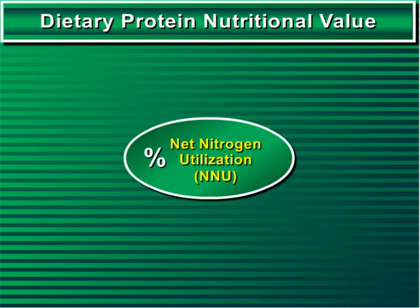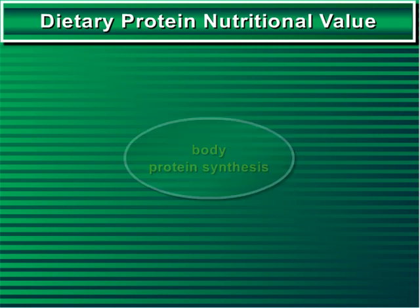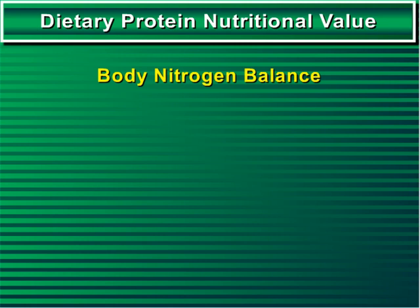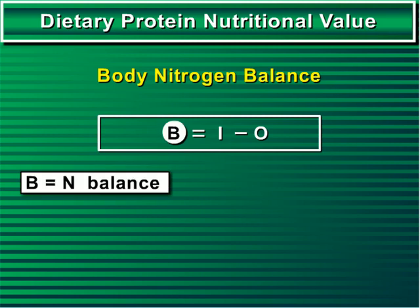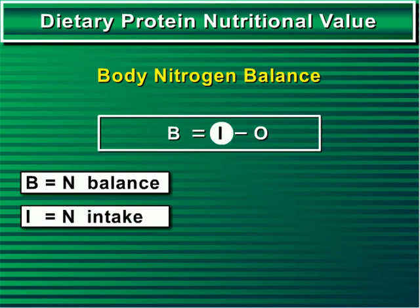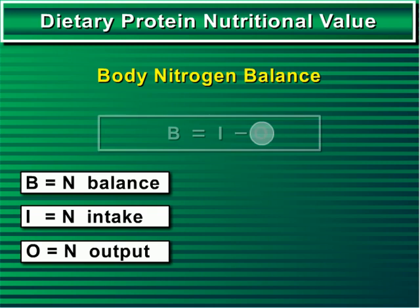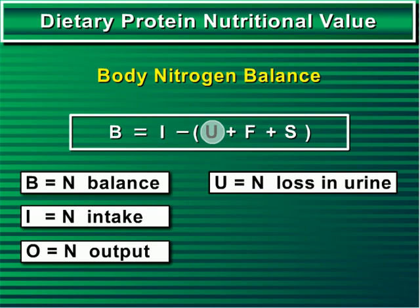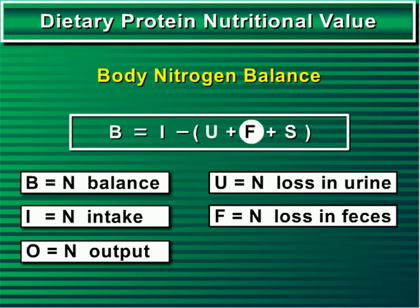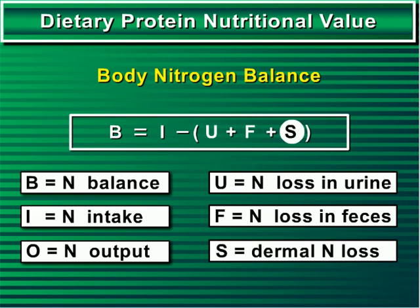A protein's NNU is the unit of measurement for body protein synthesis. It is calculated through a methodology known as body-nitrogen balance, which has been a fundamental analytical technique during the last 160 years. It can be applied by using the shown equation, where B is equal to nitrogen balance, I is equal to nitrogen intake proceeding from dietary proteins, and O is equal to nitrogen output, which in turn is the sum of U plus F plus S. Where U is equal to nitrogen loss in urine, F is equal to nitrogen loss in feces, and S is equal to the dermal nitrogen loss.